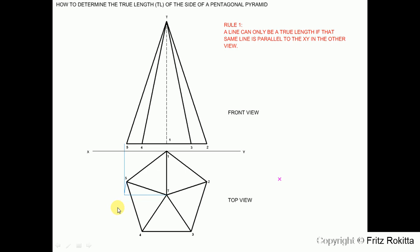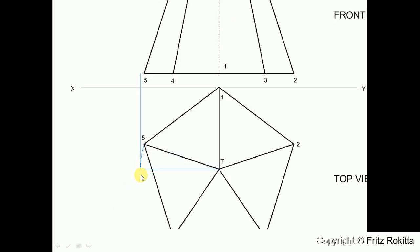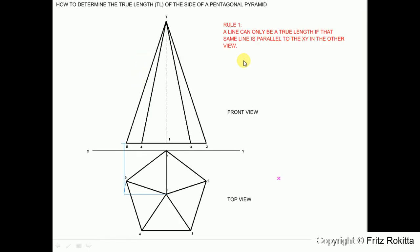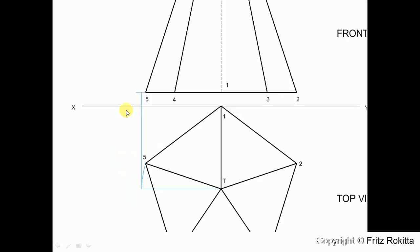Step 3. From the intersection of your construction, draw a vertical line all the way up to the front view. Step 4. Extend the base of your front view so that it intersects with the vertical line you have drawn.